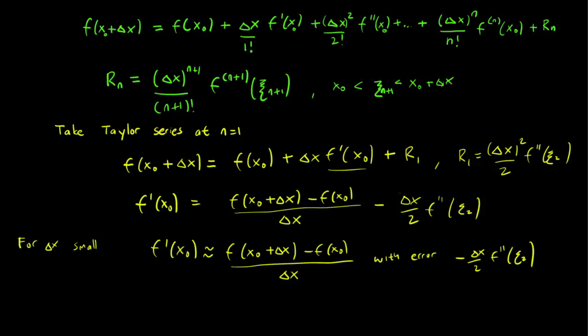In other words, for delta x small, we have that f'(x0) is approximately equal to f(x0 plus delta x) minus f(x0) over delta x, with an error of minus delta x over 2 times f double prime zeta 2. And this is known as the forward difference approximation.